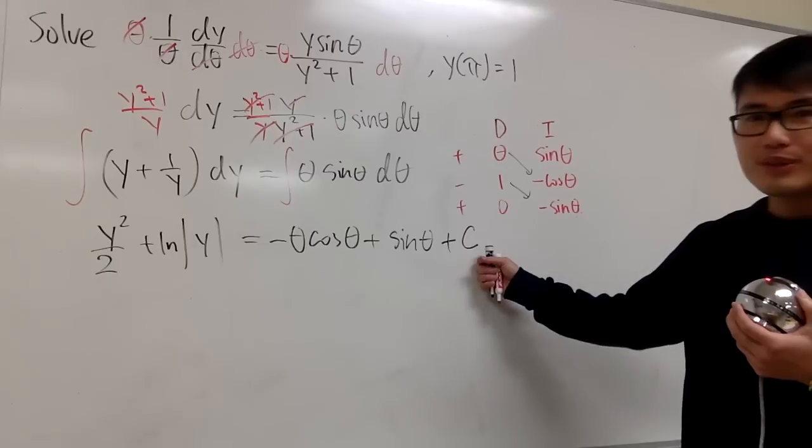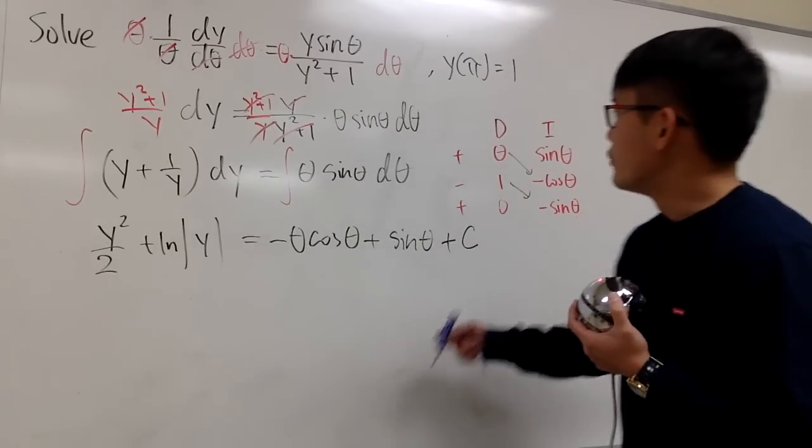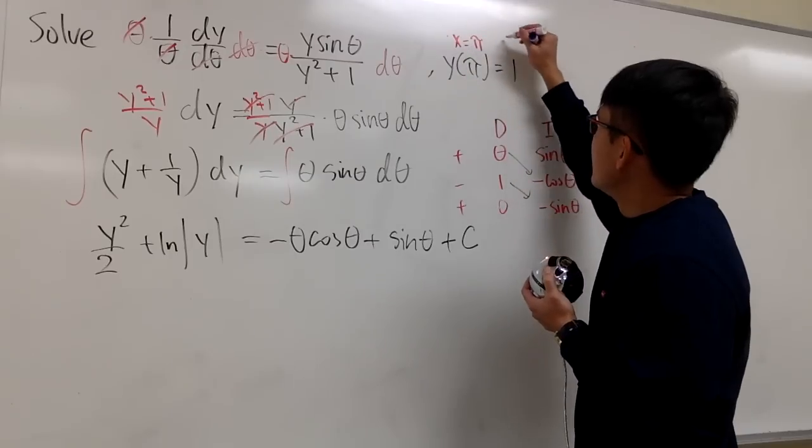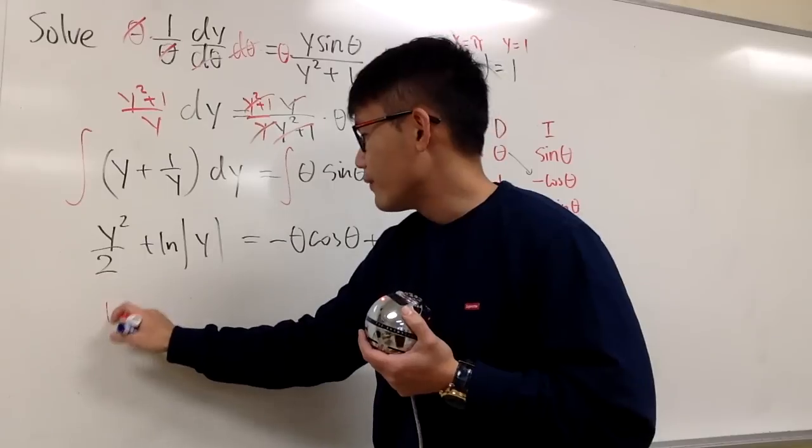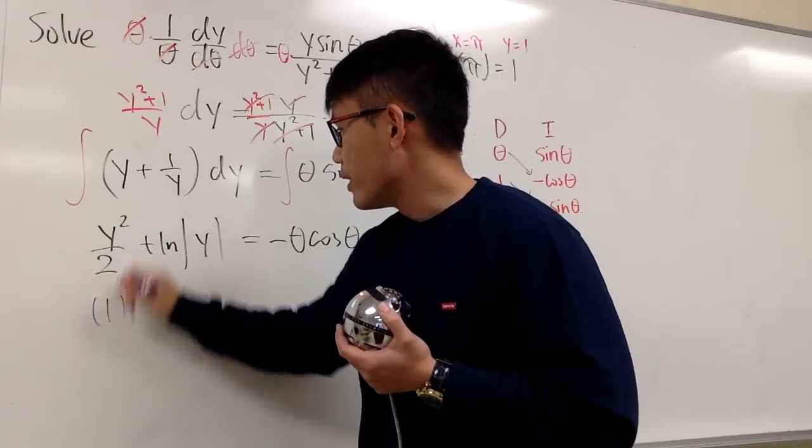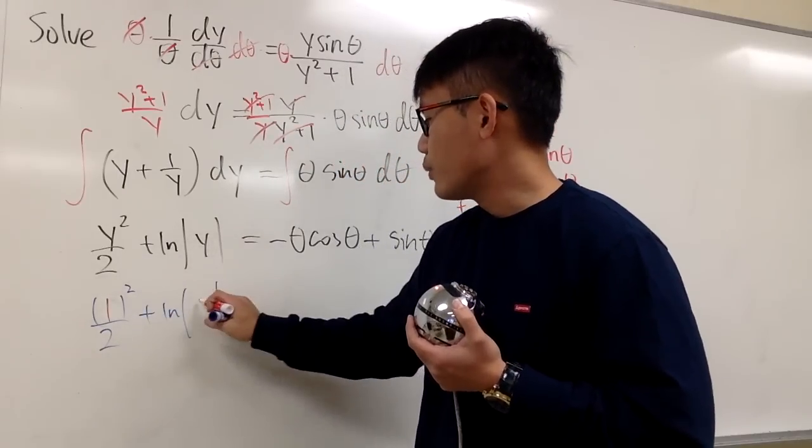Next, we have to solve for the C. Let's go ahead and do that. Refer back to this. We know when x is equal to pi, y will be 1. So plugging 1 into here, we have 1 squared, 1 squared over 2, and plus ln absolute value of y, which is 1 right here.